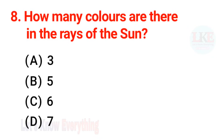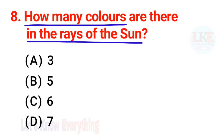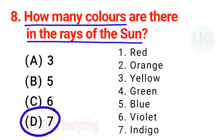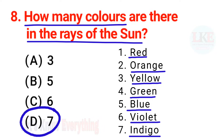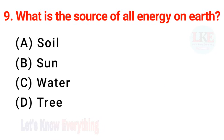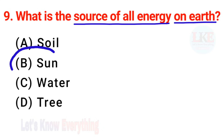Question number 8: how many colors are there in the rays of the sun? Right answer — 7. These 7 colors are red, orange, yellow, green, blue, violet, and indigo. Question number 9: what is the source of all energy on earth? Right answer — sun.